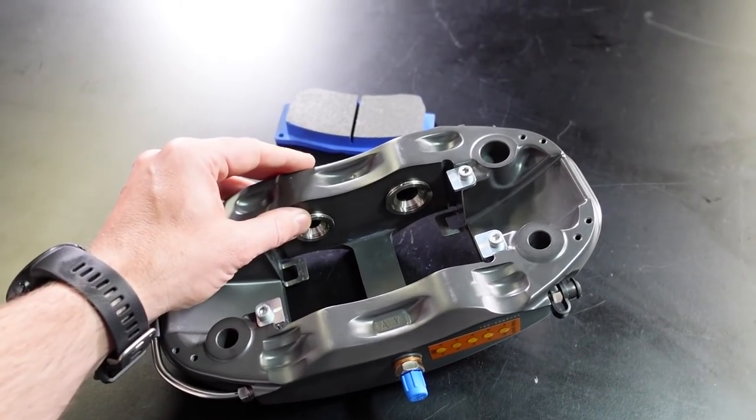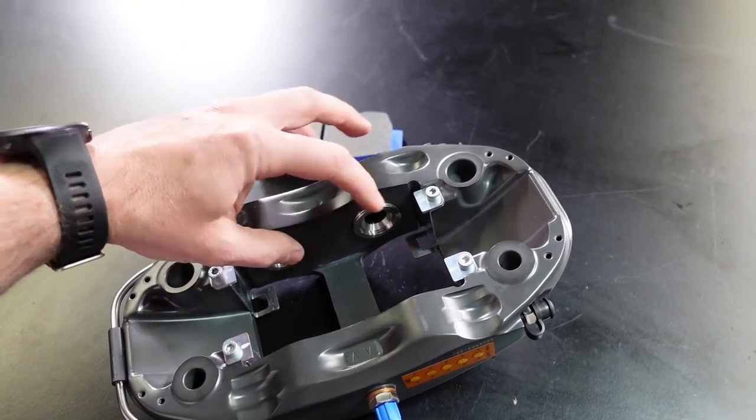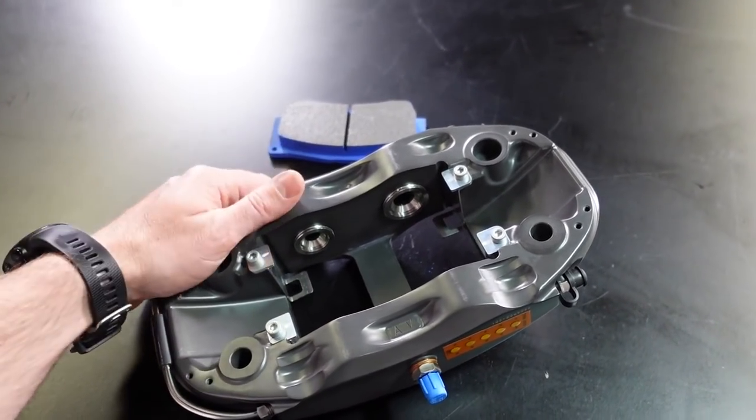What I was talking about before with having to sum the total area of the pistons, it means you would be individually summing the area of each of these four pistons and adding them together to work out the total clamping force you're going to get out of the caliper.